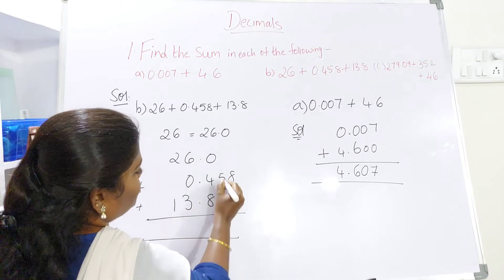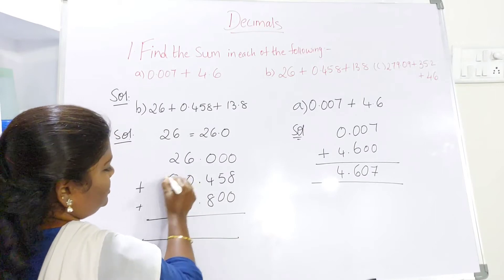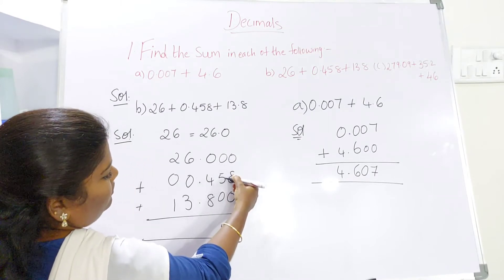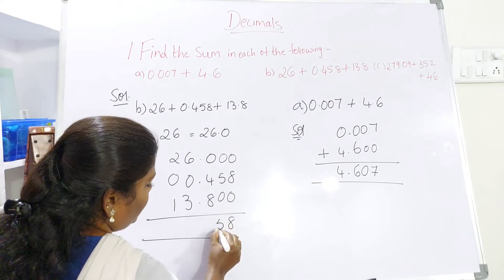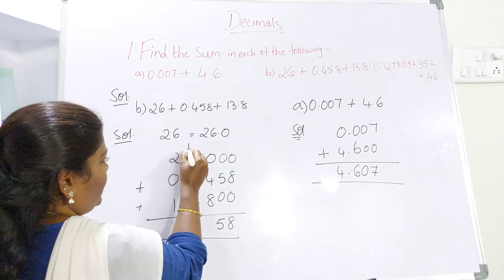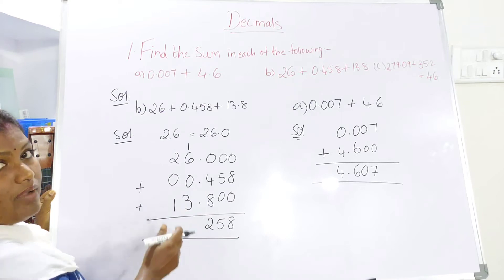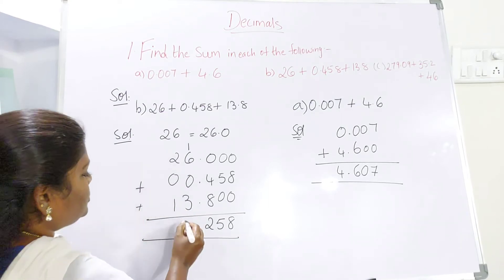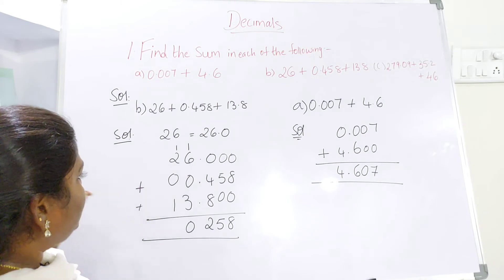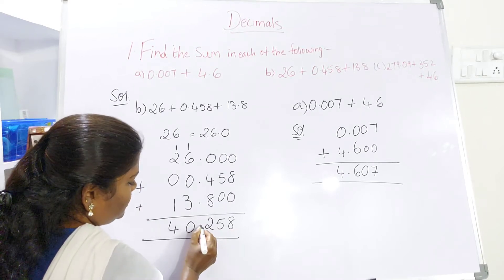Now here you can see that some spaces are empty. To avoid confusion, better add zeros wherever a digit is not there. Now just add: 0 plus 8 is 8, 8 plus 0 is 8. Next: 0 plus 5 is 5, 5 plus 0 is 5. Now 0 plus 4 is 4, and 4 plus 8 is 12, so 1 will be carried over to the ones place and 2 is written in the tenths place. Now 6 plus 1 is 7, 7 plus 3 is 10, so 0 and 1 is carried over. Now 1 plus 2 is 3, 3 plus 1 is 4. Decimal point is after 3 digits, so count 1, 2, 3 and place the decimal point.